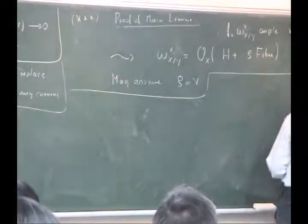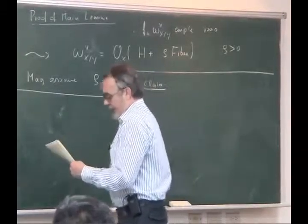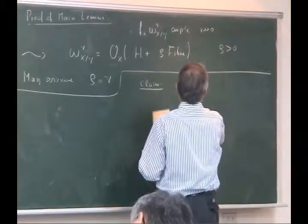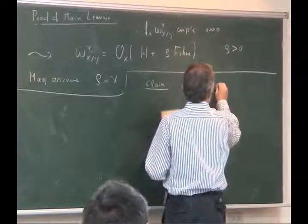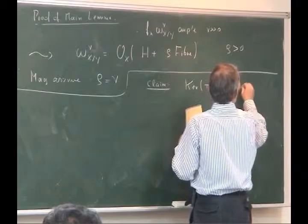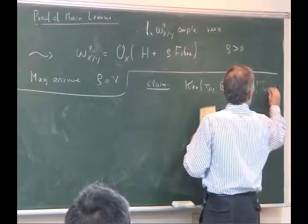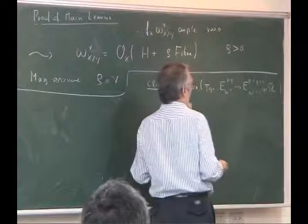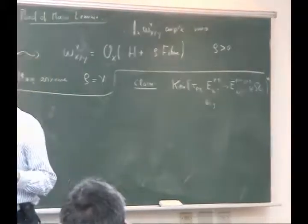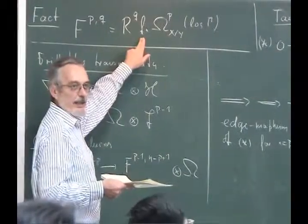So the claim was that the kernel of τ^{pq} — where τ^{pq} goes from E^{pq}(ω^{-1}) to E^{p-1,q+1}(ω^{-1}) ⊗ ω_Y — that this kernel is negative, or as I put it, the dual of this kernel is big. This is what I wanted to show, where E^{pq}(ω^{-1}) means this thing twisted by ω^{-1}.